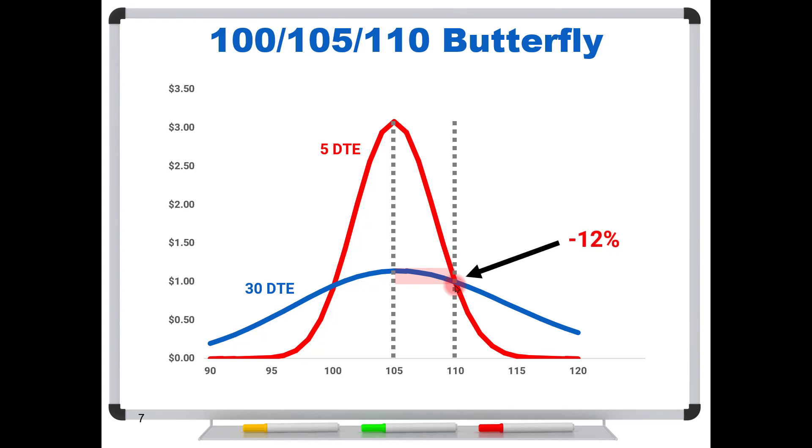But if we take that same stock price move with only five days to expiration, look what happens. Now you're going to go from this value down to here, right where this red curve intersects this gray line at 110. Okay, do you see how much bigger that drop is? Well, that's a 68% drop. That's a whole lot different from 12%. And that's why you're seeing these big radical changes as you get closer to expiration.